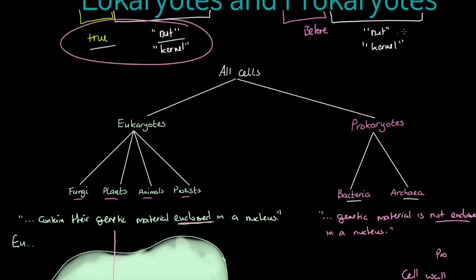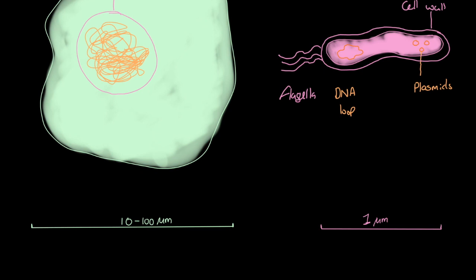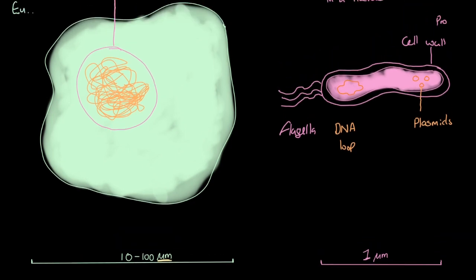So to remind you: the notion of 'true nut' and 'before the nut' refers specifically to the fact that eukaryotic cells have their DNA enclosed in a membrane-bound nucleus, while bacterial cells do not. Regarding scale, eukaryotic cells range from 10 to 100 micrometers — one micrometer being one thousandth of a millimeter — while bacterial cells are in the region of just one micrometer, so you could fit a thousand of them across one millimeter.